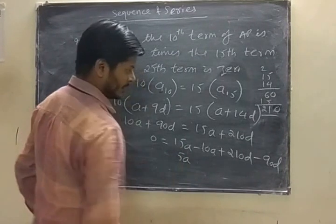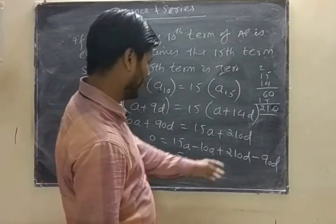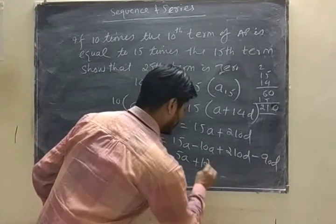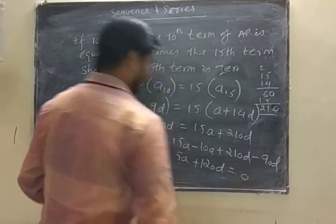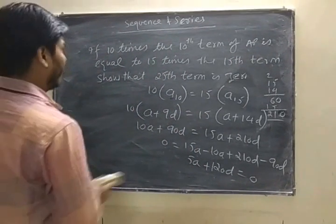So we get 10a, 5a plus, from 200 subtract 90, we get 100, 20a, 20, 0. Dividing the whole equation by 5.